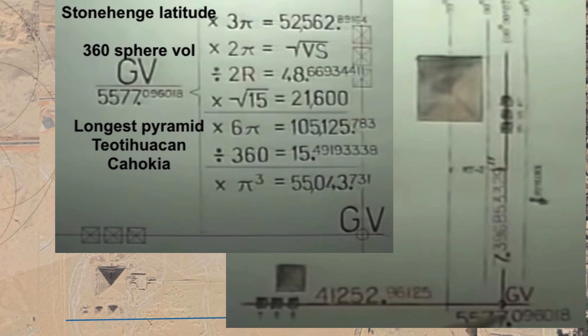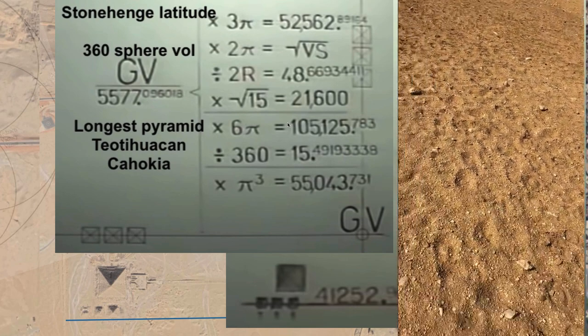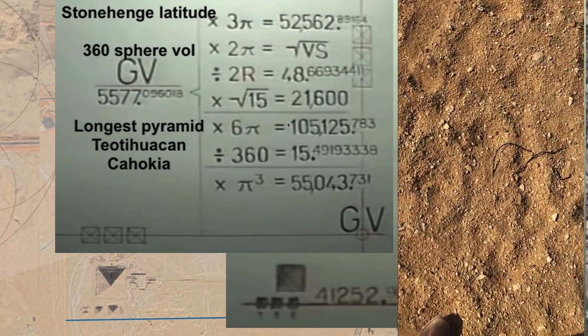It gives the Stonehenge latitude because you take the Giza Vector times three pi. It gives the 360 sphere volume if you multiply the Giza Vector times two pi. It shows the longest pyramid, it shows Teotihuacan, and by taking the Giza Vector and multiplying it by pi cubed, you actually get Cahokia — the largest pyramidal structure in North America. So this point right here is Carl Monk's Giza Vector. I actually put some stones there, so if you're on the Giza Plateau, look for where the Giza Vector actually is.